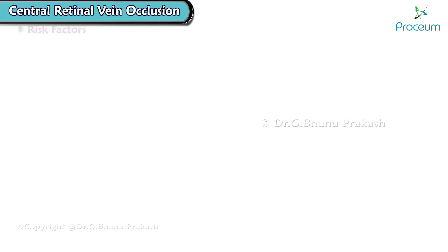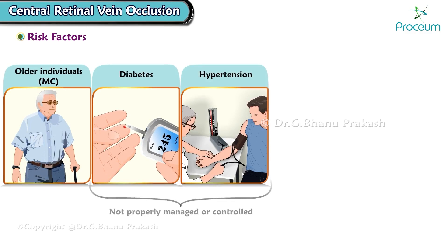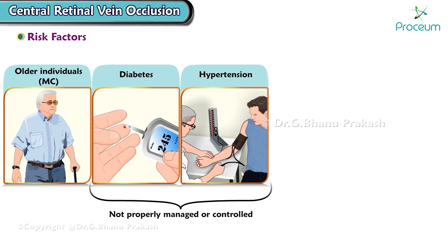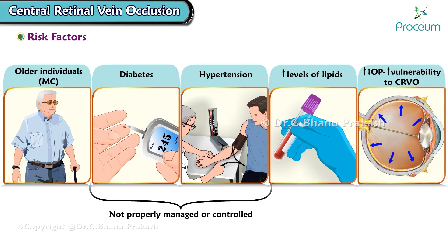Next, let's go over the risk factors associated with central retinal vein occlusion. It is more commonly observed in older individuals. Chronic conditions like diabetes and hypertension, if not properly managed or controlled, can significantly elevate the risk. Elevated levels of lipids in the blood can contribute to its development. Elevated intraocular pressure can also increase the vulnerability to central retinal vein occlusion.